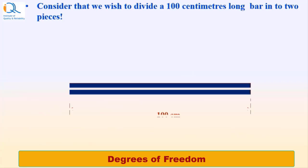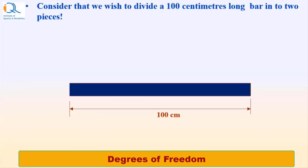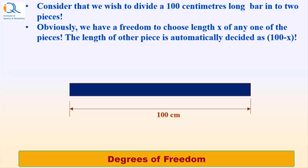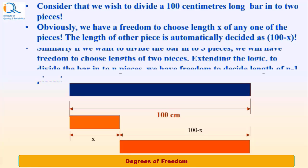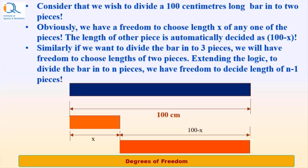Let us see a simple illustration. Consider that we wish to divide a 100 cm long bar into two pieces. Obviously, we have freedom to choose length x of any one of the pieces. The length of the other piece is automatically decided as 100 minus x. Similarly, if we want to divide the bar into three pieces, we will have freedom to choose length of two pieces. Extending the logic to divide the bar into n number of pieces, we will have freedom to decide length of n minus 1 number of pieces. And that is the degrees of freedom for n data points.